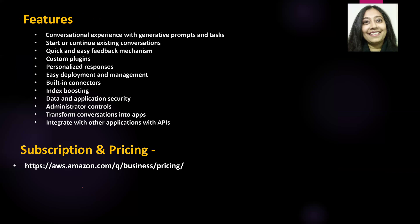To sum up the features of Amazon Q Business: it is a chatbot that gives you a conversational experience with generative AI prompts and tasks. You can start, continue, and resume conversations within a 30-day span. It offers quick feedback, custom plugins, personalized and permission-aware responses, easy deployment, many connectors, index creation, data and application security, admin controls, the ability to transfer conversations into apps, and integration with other applications via APIs.